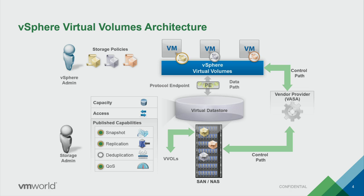We query the array to understand what it can do for us in the vSphere world — QoS, snapshotting, all those types of things — and send that to vSphere to create, in essence, a menu whereby we can create policies to deliver data services to virtual machines on a per-VM basis. Gold, silver, bronze, mission critical — however you want to label them. These can be application-oriented policies rather than worrying about individual RAID types or compression settings.